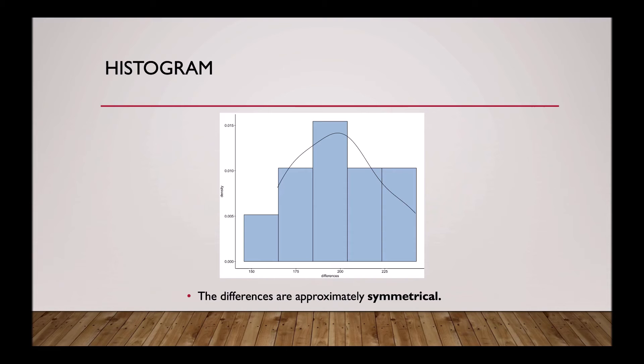Here is the histogram that that code produces. As you can see, the differences between pairs are approximately symmetrical. Remember that it does not have to be perfect.